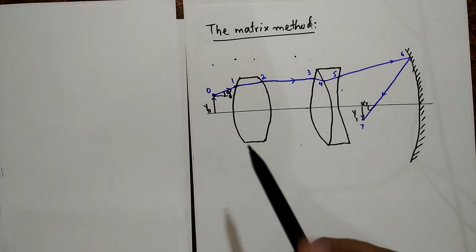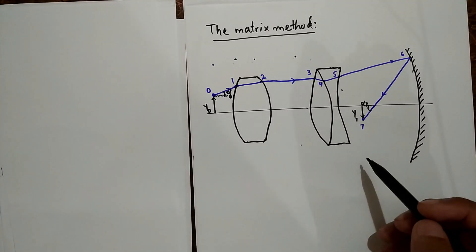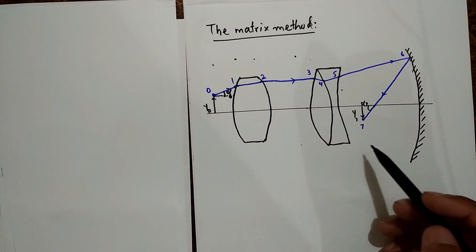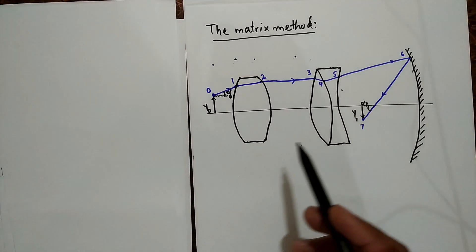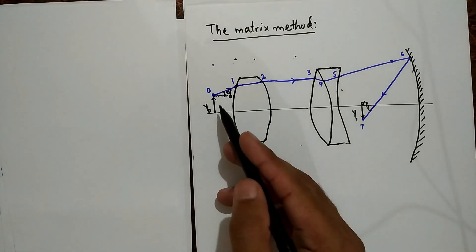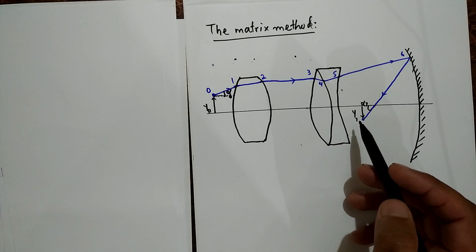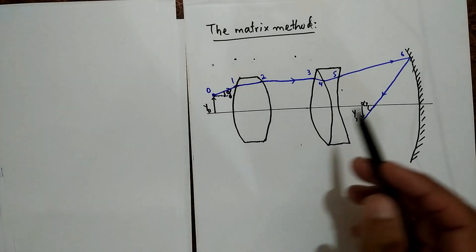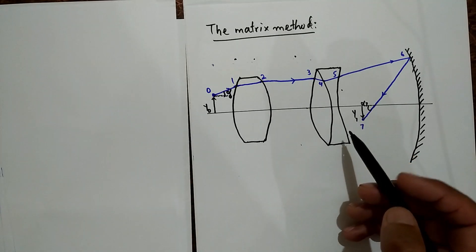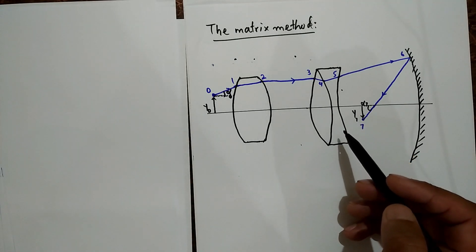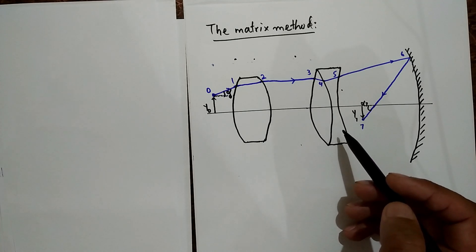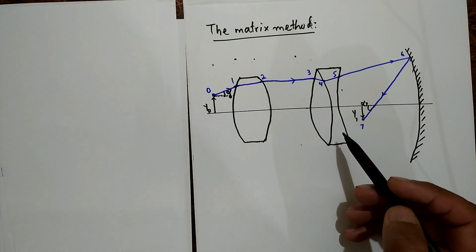In other words, given the input data y₀ and α₀ at point O, we wish to predict the output values y₇ and α₇ expressed in matrix form.